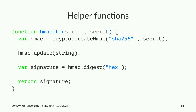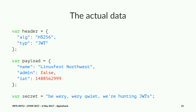Second helper function: to HMAC-sign something. It takes two arguments — the string you're trying to sign, and the secret you'll sign it with. We use the crypto library to create an HMAC object of SHA-256, give it the secret, stick the string in, and ask for the digest in hex form. Here's the data we're going to be using: a header much like I showed before, a payload exactly like before, and our secret — which can be anything, it just has to be kept secret.